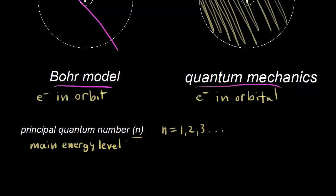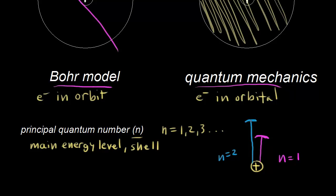You might hear this referred to as a shell. As n increases, the average distance of the electron from the nucleus increases, and therefore so does the energy. For example, for n equals one, the average distance from the nucleus is relatively close. For n equals two, it's a higher energy level, so on average the electron is farther away and has a higher energy. That's the idea of the principal quantum number — energy levels or shells, and average distance from the nucleus.